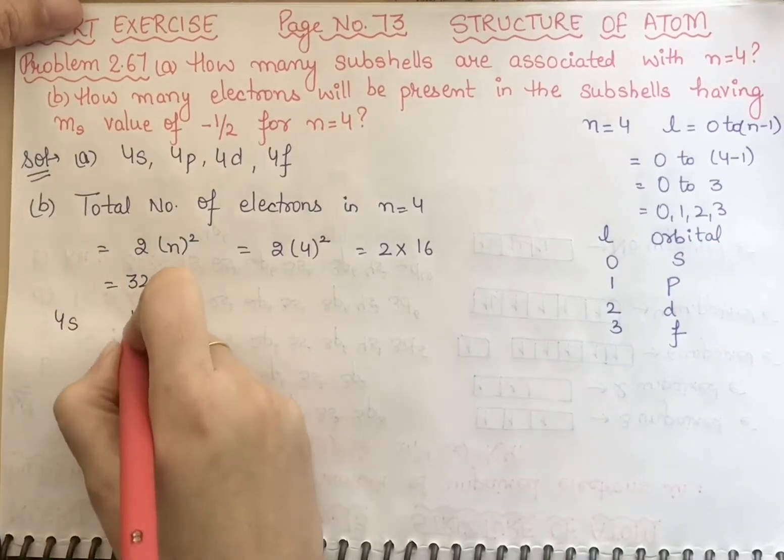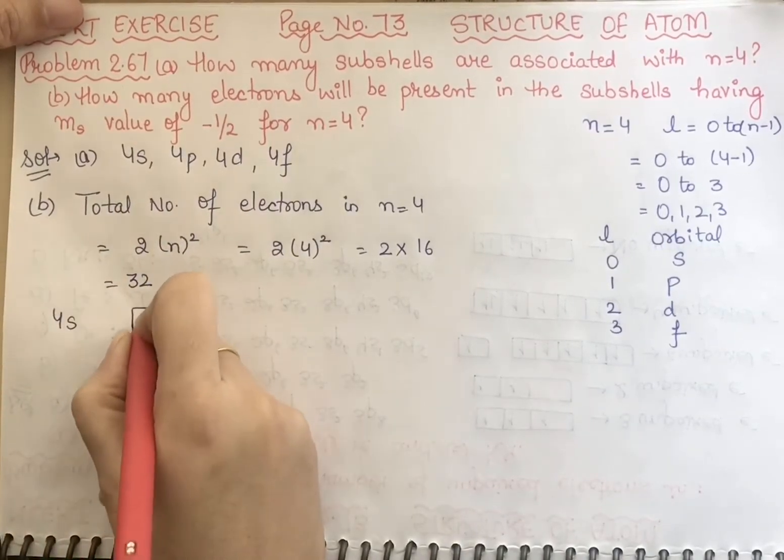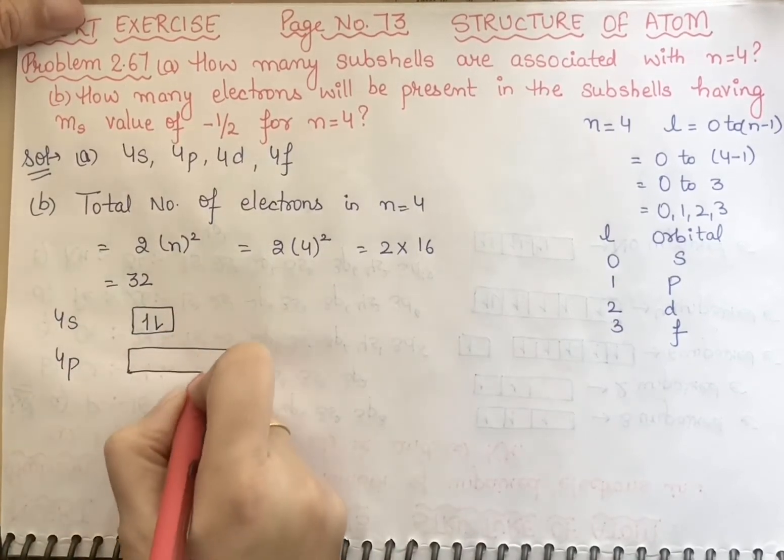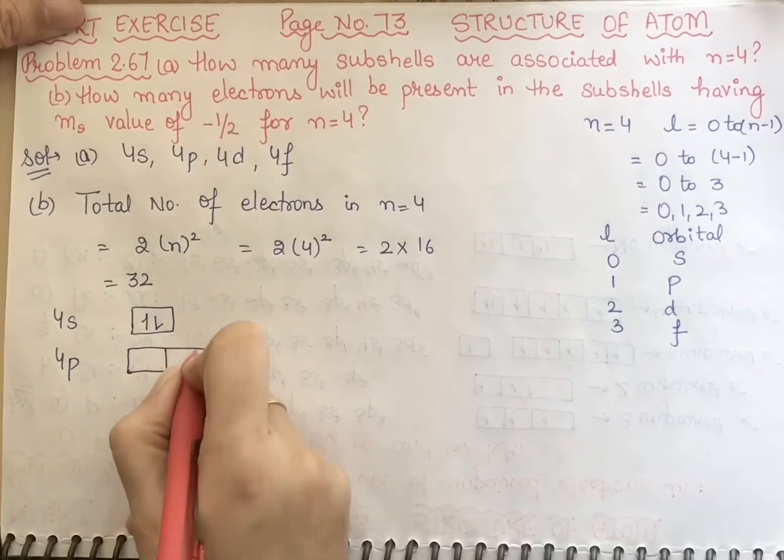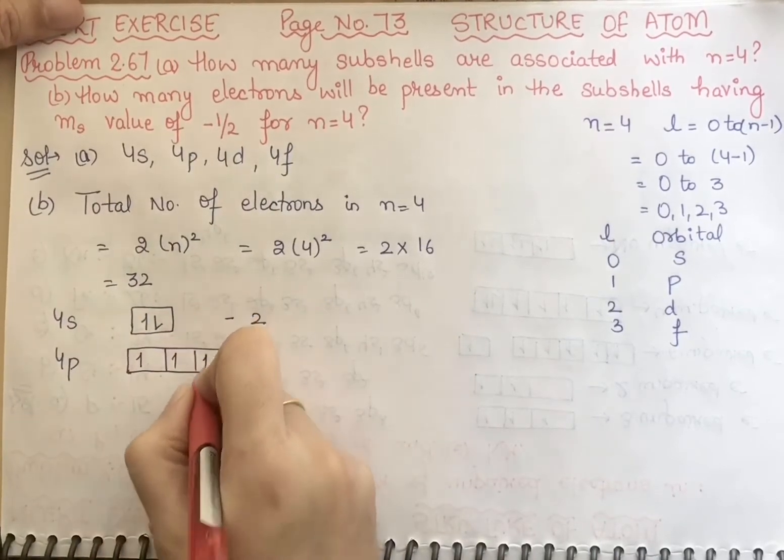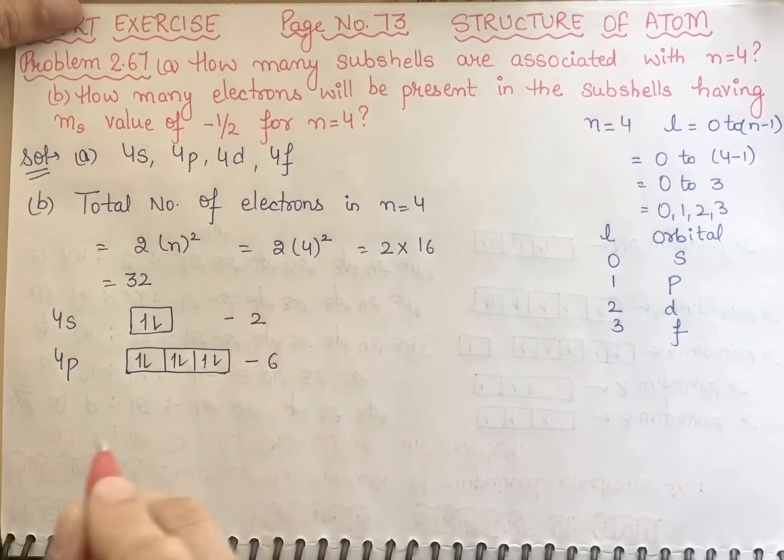How much electron will be in 4s? 2 electrons, so 1 and 2. How much electron will be in 4p? 6 electrons. Fill me up in this: 1, 2, 3, 4, 5, 6.